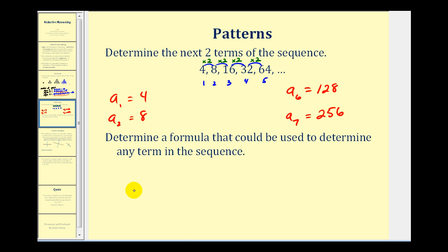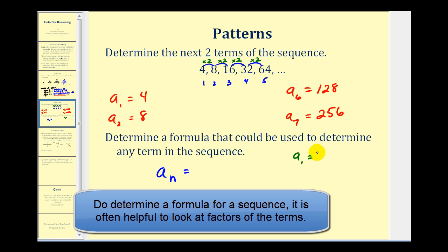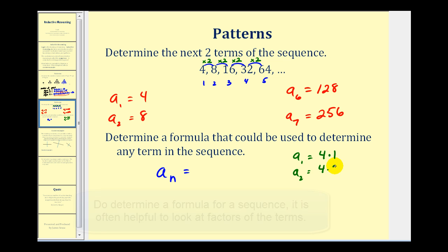Now there's another question here. They want us to determine a formula that could be used to determine any term in the sequence. Well, any term in the sequence, using this notation here, could be identified by a sub n, where n would be the term in the sequence. This problem is a little bit more challenging. We know a sub one is four, but we could also write it as four times one. A sub two is eight, but we could write eight as four times two. A sub three is sixteen, but we could write sixteen as four times four. Let's go ahead and list one more. A sub four would be thirty-two. We could write thirty-two as four times eight.